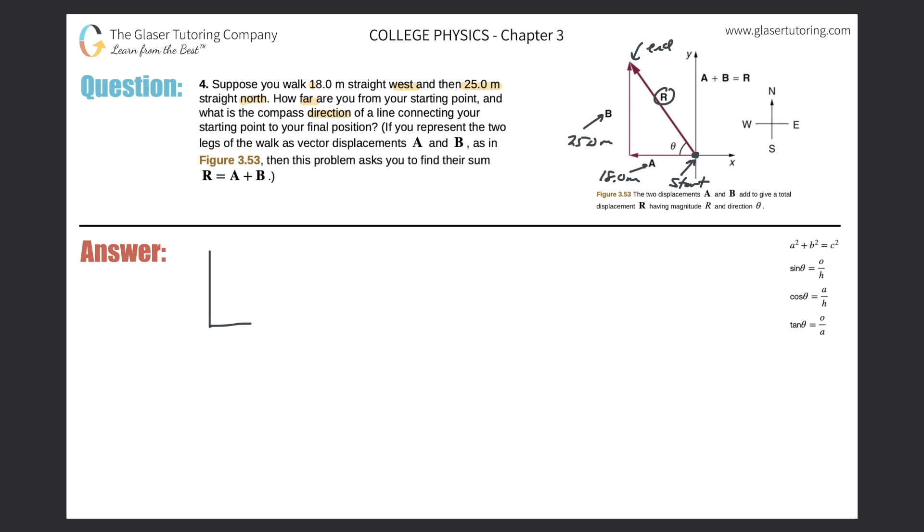If I were to redraw the triangle down here, it looks like we would have something that looks kind of like this. And here would be 18.0, this side is 25.0, and this is my R value, the resultant.